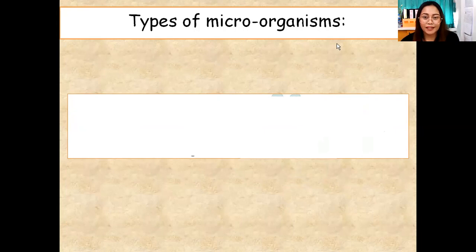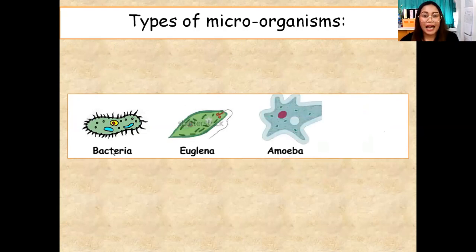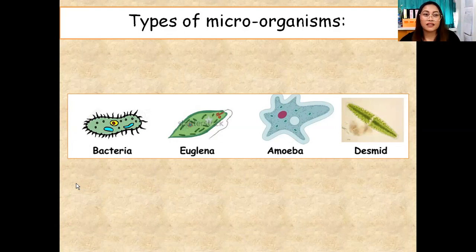Let's move on. What are the types of microorganisms? The first and very common one — you all know this — bacteria. They are everywhere. Next we have Euglena, amoeba, and desmid. These types of microorganisms — bacteria, Euglena, amoeba, desmid — are found in water, air, soil, and some in our bodies, plant bodies, and animal bodies.